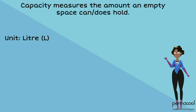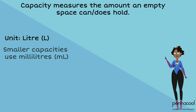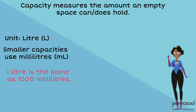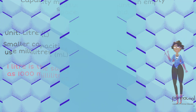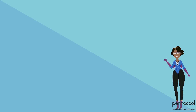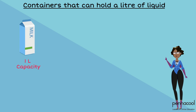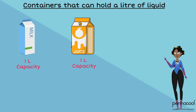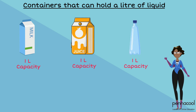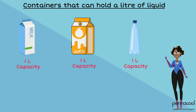However, smaller capacities are recorded in milliliters. One liter is the same as 1000 milliliters. Examples of containers that can hold a liter of liquid are milk cartons, family juice boxes, and moderately sized water bottles. Anything smaller would be measured in milliliters, while anything larger would be measured in liters.